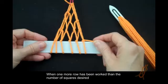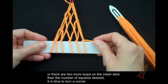When one more row has been worked than the number of squares desired, or there are two more loops on the mesh stick than the number of squares desired, it is time to turn the corner.